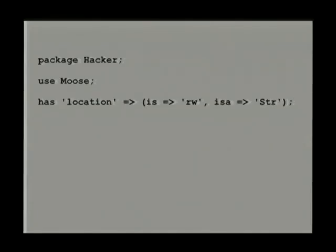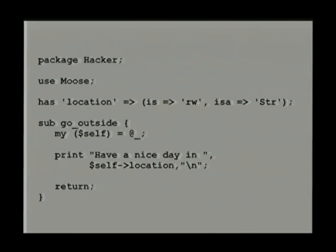So we've seen how we can do types. What about methods? How can I write my methods? If I've just got an object where I can put data in and pull data out, that's not particularly useful — I could use a hash for that. So we're going to extend our Hacker even more. We're going to say that our hacker has a location, which is just a string. And I'm going to say that we can go outside. The way we write a method is by writing a subroutine — the very first argument passed in is the object itself.